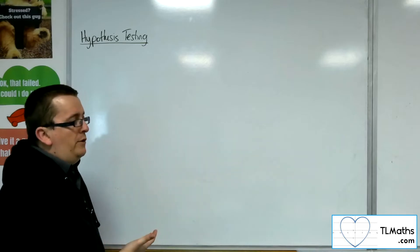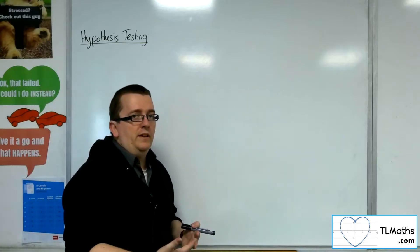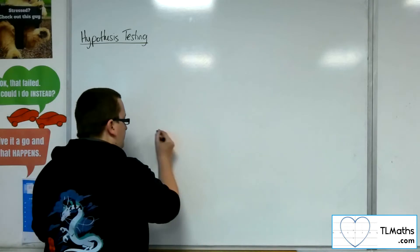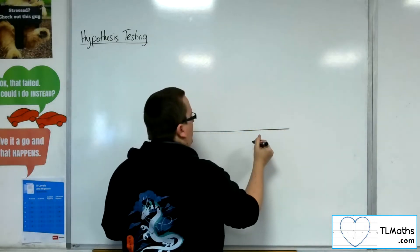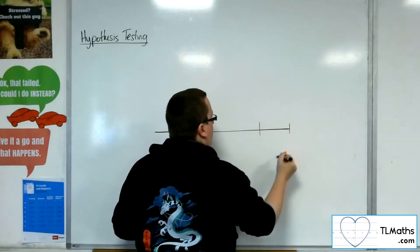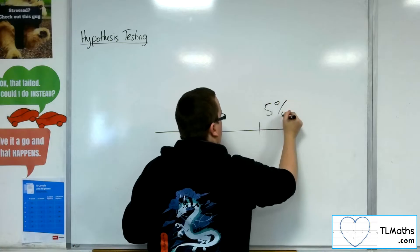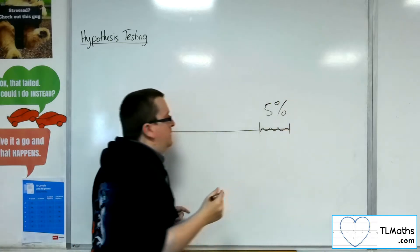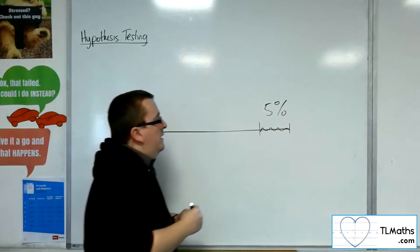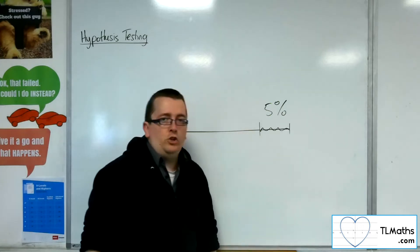So, let's say that there is this 5% significance level that is set. So, what we're saying is that if that's 5%, that region there, we refer to that as the critical region.